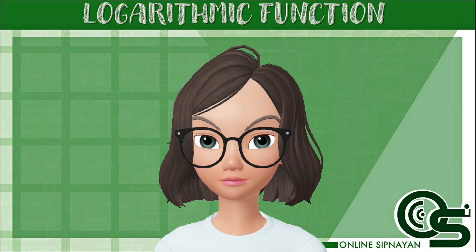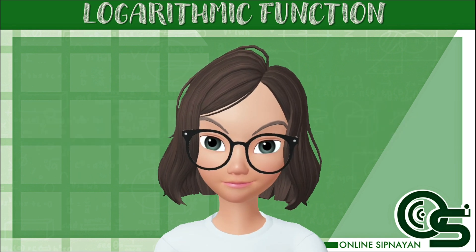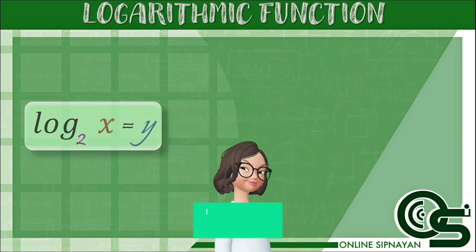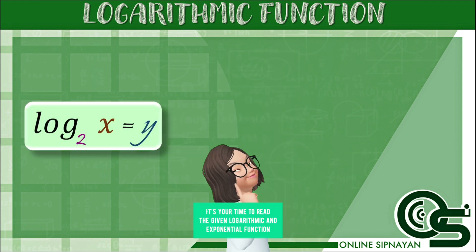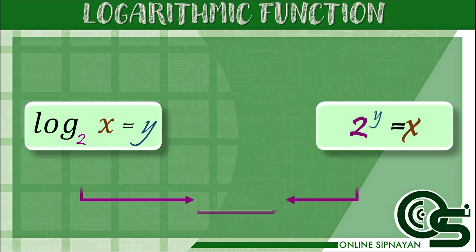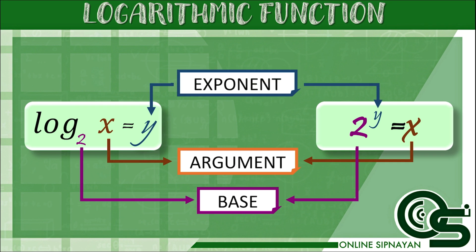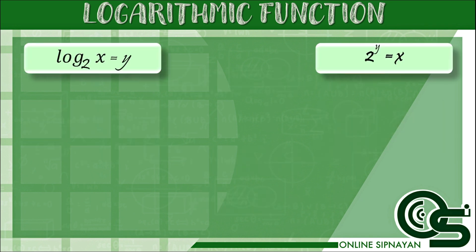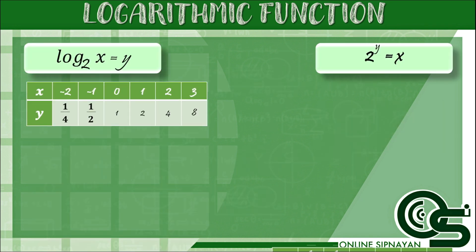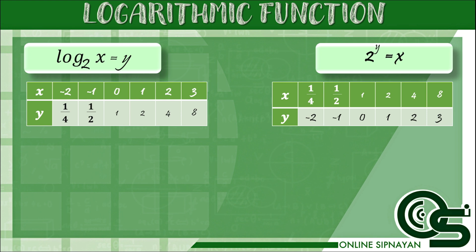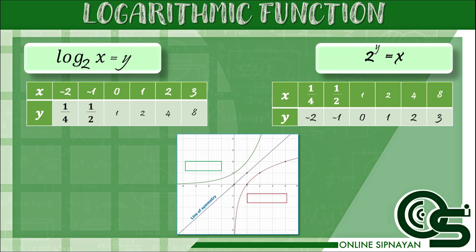Now let's look at an example that shows the exponential form is the inverse of the logarithm. If you find the table of values of the given logarithmic function and exponential function, this will be the graph, and it proves that the exponential form is the inverse of the logarithm.